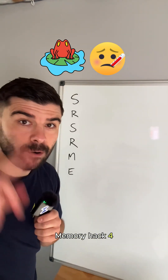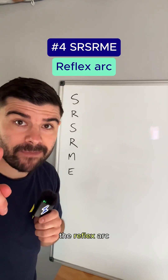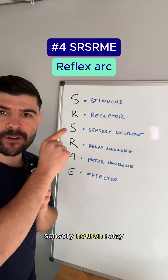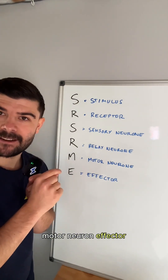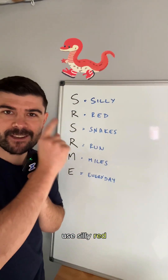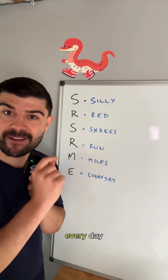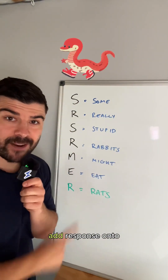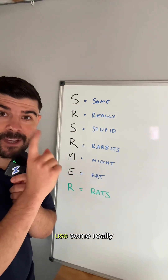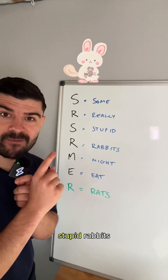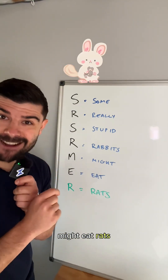Memory hack four: how to remember the reflex arc — stimulus, receptor, sensory neuron, relay neuron, motor neuron, effector. Use: silly red snakes run miles every day. If you want to add response onto the end of this, use: some really stupid rabbits might eat rats.